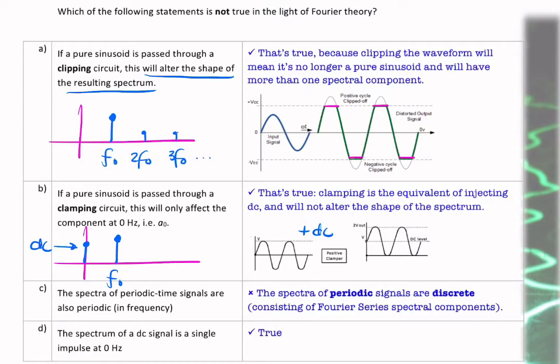It's the so-called A0 term. So what we're doing is we are changing the spectrum, but not the shape of the spectrum. It will only affect the component at 0 hertz, it's only affecting the DC. So this is true.